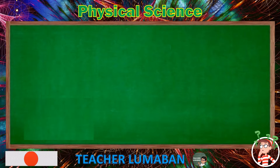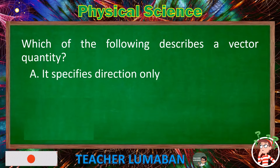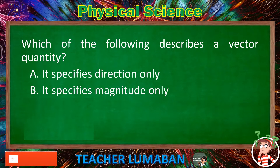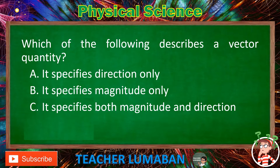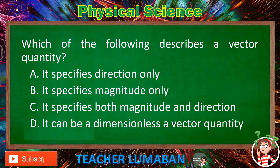Which of the following describes a vector quantity? Letter A: It specifies direction only. Letter B: It specifies magnitude only. Letter C: It specifies both magnitude and direction. Letter D: It can be a dimensionless vector quantity.